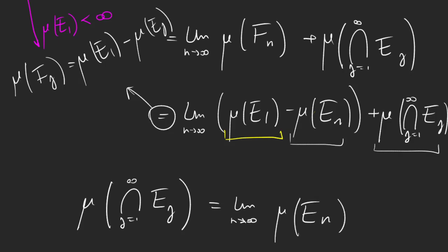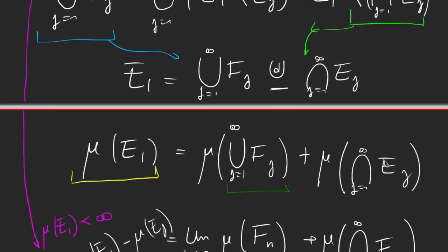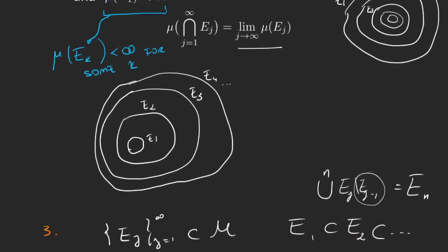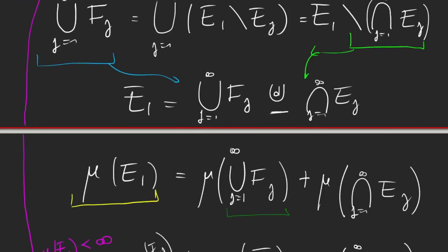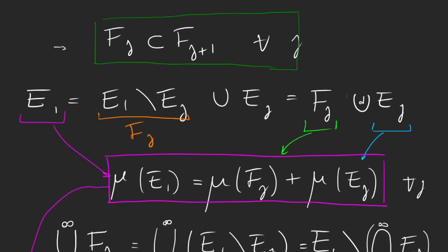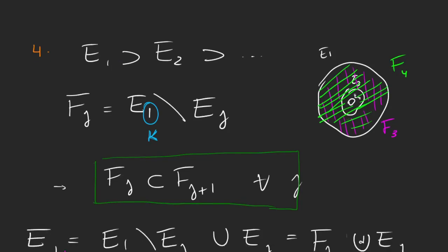This is exactly what we were trying to prove. When we started this property I said it wasn't actually necessary to have the measure of e1 be the finite one — we could have it for any e sub k. The proof for that would follow the exact same argument, but starting with e sub k instead of e1, defining f as e sub k minus e sub j and doing everything analogously, reaching the same conclusion.